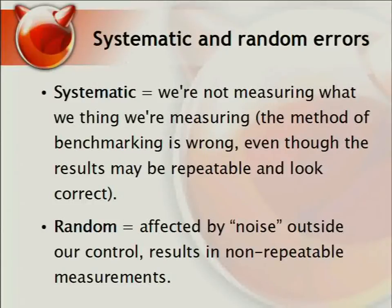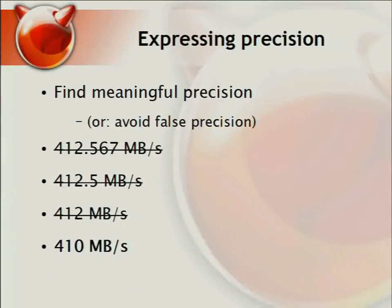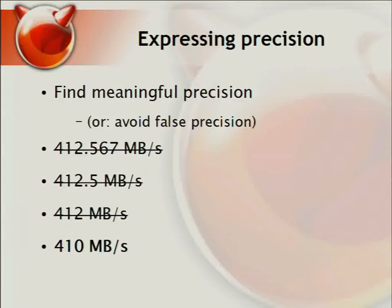Random errors are basically noise that can come from all parts of the system. You can either reduce it or just limit it and use statistics to establish some kind of median or average value. Many benchmarks also exaggerate their precision. You can see benchmarks on the internet saying a hard drive or SSD has 412.567 megabytes per second — this is usually nonsense. You cannot measure hard drive or SSD performance to that precision. In most cases, the best you can do is two significant digits, so this would be better expressed as approximately 410 megabytes per second.